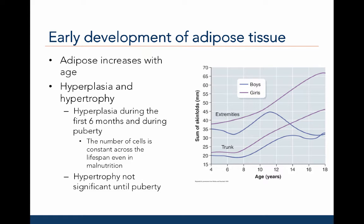Adipose tissue increases with age. Like muscle, adipose cells develop as a function of hyperplasia and hypertrophy. Hyperplasia continues from prenatal development through the first six months of postnatal development and again during puberty. Once additional cells are created, those cells remain across development. Even in cases of severe malnutrition, there is not a loss of adipose cells. Hypertrophy increases the size of adipose cells, but this is not significant until puberty.